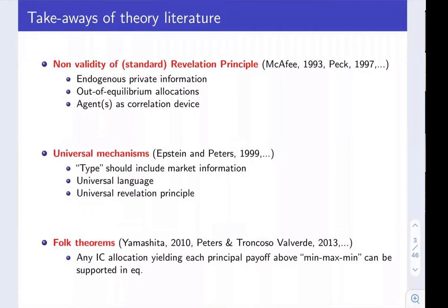The theoretical literature on competing mechanisms has established three blocks of results. The first result noticed back in the 90s is that when you have competing designers, the usual revelation principle does not apply. The reason is that agents possess private information not just about the exogenous payoff type — the parameter that moves preferences or technology — but they also have private information about the mechanisms of the other principals. A principal may want to consult with the agents, learn about the offers made by other principals, and then respond accordingly. But that cannot be done in full flexibility by restricting attention to the usual direct mechanism where the report is just the agent's exogenous type.